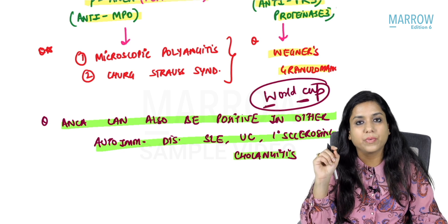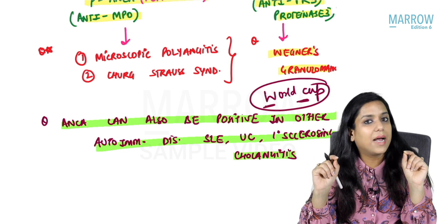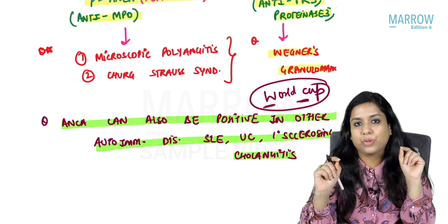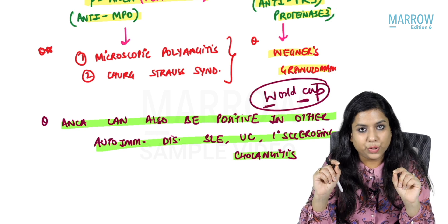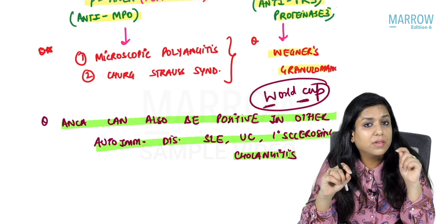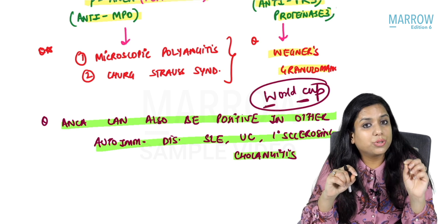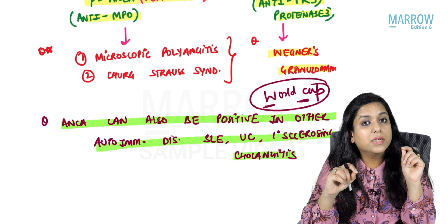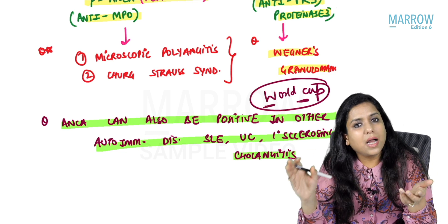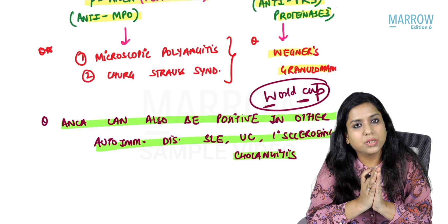ANCA positivity can be given as a keyword in a clinical MCQ. You can be given a clinical history and in the last line the examiner states the patient is PANCA positive or CANCA positive, which will help you reach the diagnosis quickly.